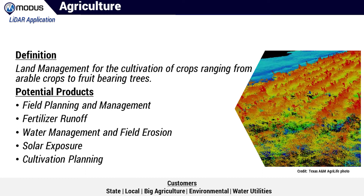LiDAR can create an elevation map of farmland that is converted to create a slope map. Topography helps farmers find areas of high fertiliser runoff, allowing systematic application of fertiliser and water for less runoff and better yields — an efficient use of an expensive farming input. Sunlight exposure maps are useful in areas with varying topography such as valleys, with solar exposure predictive data used to best select plant cultivation in predicted high, medium, and low crop production areas.